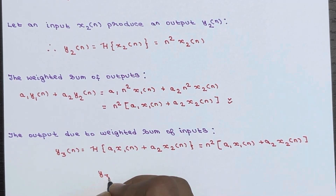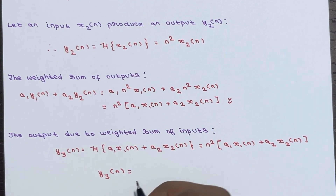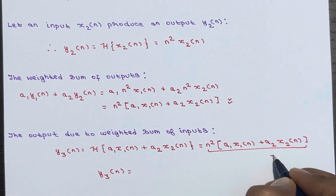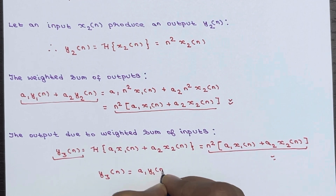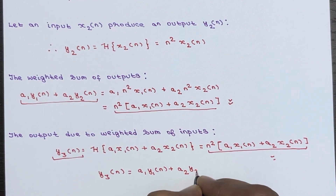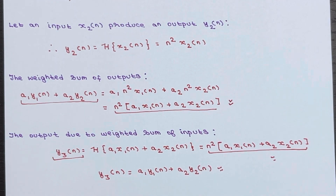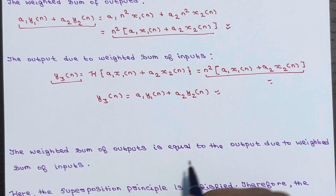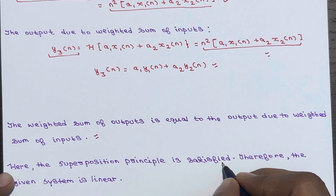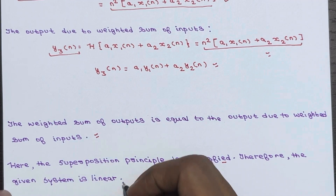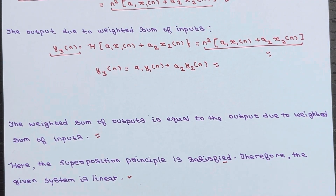Comparing the two expressions, y3(n) equals a1·y1(n) + a2·y2(n). The weighted sum of outputs is equal to the output due to the weighted sum of inputs, which means the superposition principle is satisfied. Therefore, the given system is a linear system. This is the easiest approach for these problems.